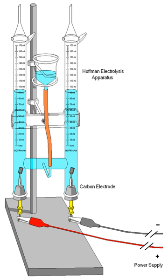A specialized application of electrolysis involves the growth of conductive crystals on one of the electrodes from oxidized or reduced species that are generated in situ. The technique has been used to obtain single crystals of low-dimensional electrical conductors, such as charge-transfer salts.